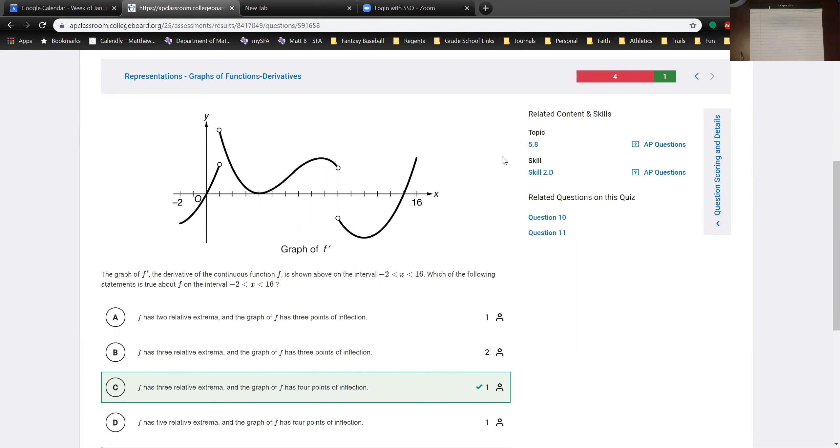Okay, I want to go through another example of using the graph of f prime to classify extrema and possible points of inflection given the fact that our original function f is a continuous function. That's a very important point.